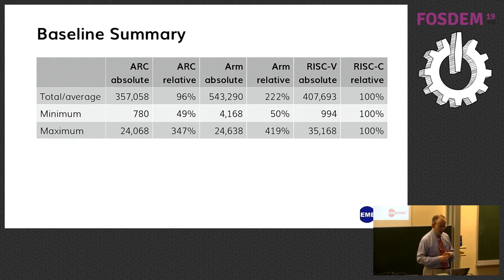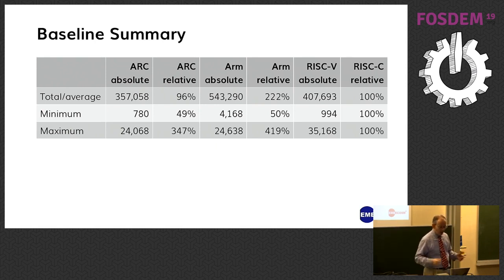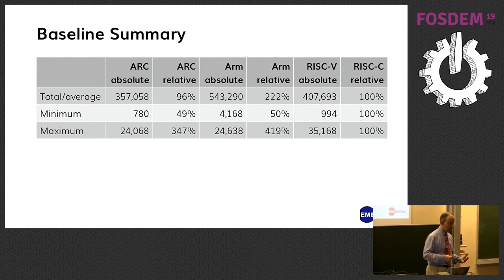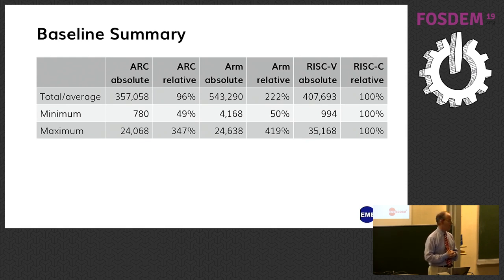ARC has some programs it can do twice as well as RISC-V, and ARM has some similarly twice as well. But both ARM and ARC have some pathologically different cases where they're far bigger than RISC-V. So why does ARM do so badly with small programs?